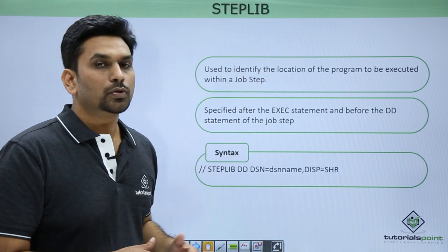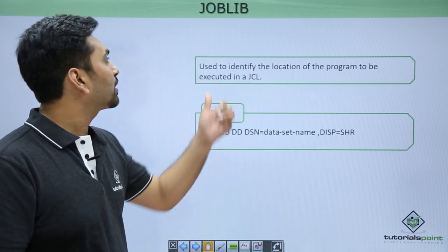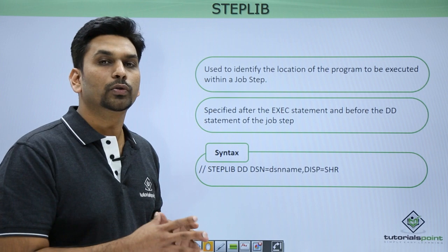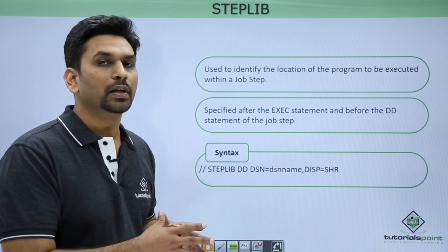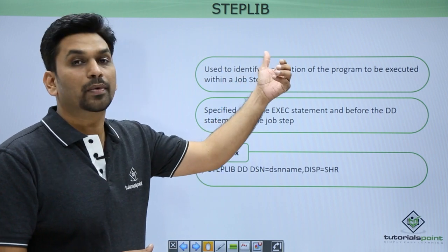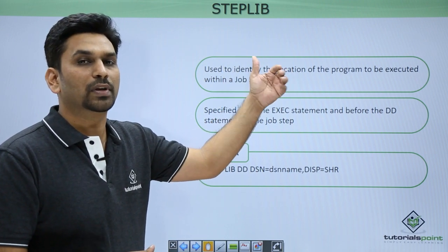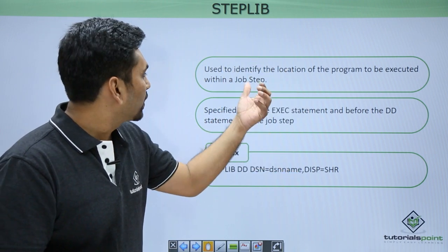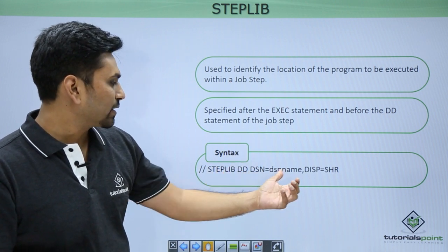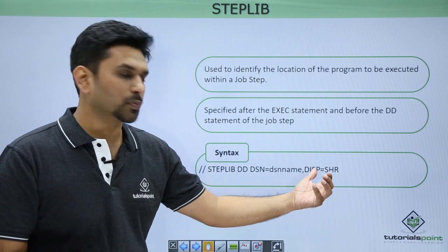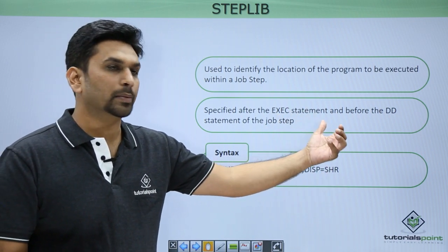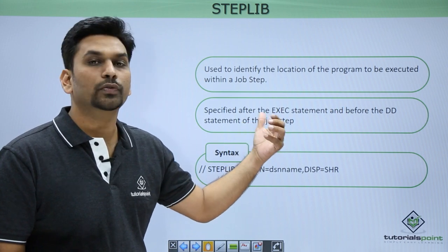Similarly we have STEPLIB. Previously we mentioned the library at the job level. Suppose if you have a program and you know its location, you can mention that at the step level itself. This will be applicable only to that step — it will not be applicable to other steps. The syntax is STEPLIB and DD, with the same DSN and disposition share, and it should be specified after the EXEC statement and before the DD statement of the job step.